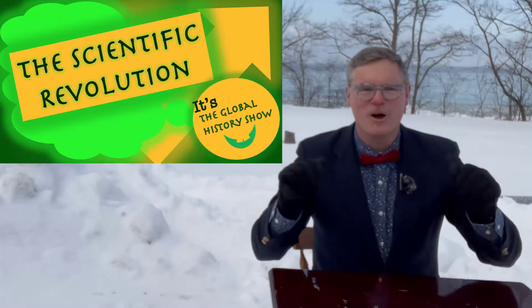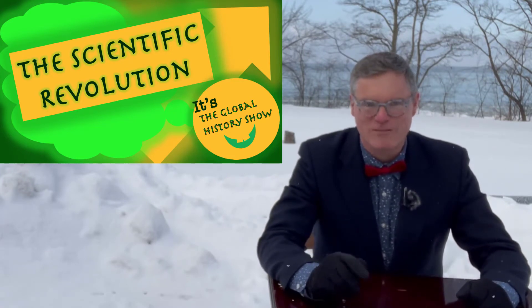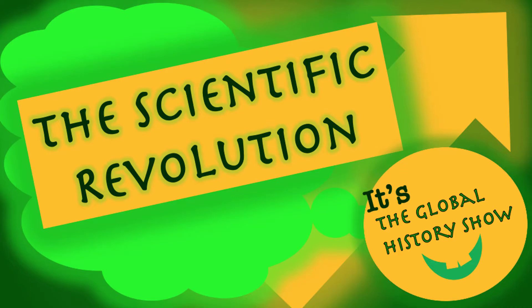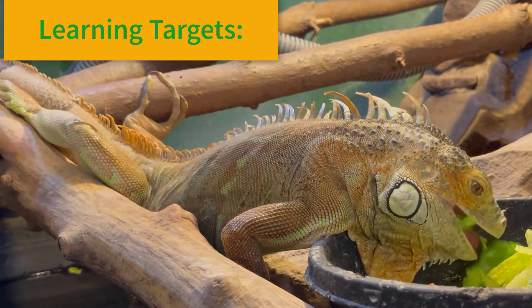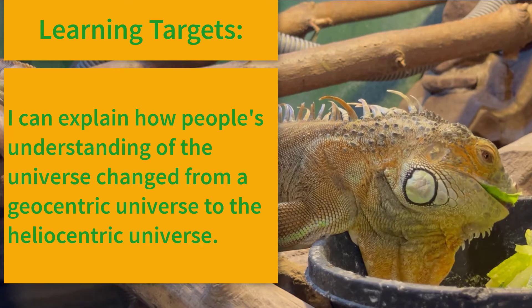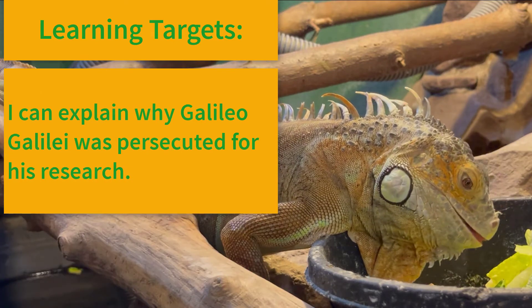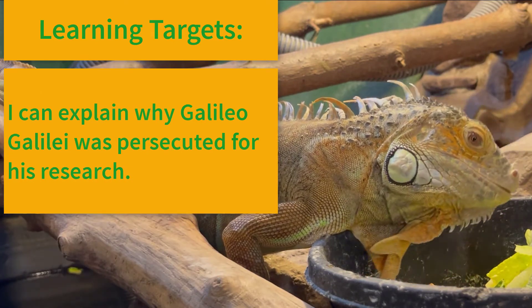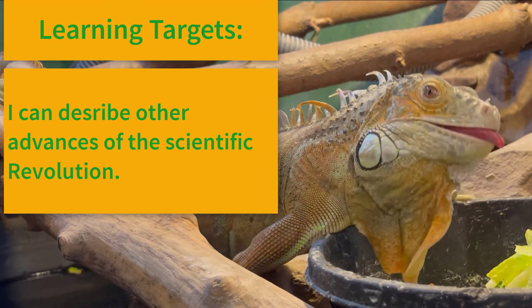It's the Global History Show with Mr. Benjamin. This episode: the Scientific Revolution. Learning targets for this episode: I can describe what brought about the scientific revolution. I can explain how people's understanding of the universe changed from a geocentric universe to a heliocentric universe. I can explain why Galileo Galilei was persecuted for his research. I can trace the steps of the scientific method. I can describe other advances of the scientific revolution.